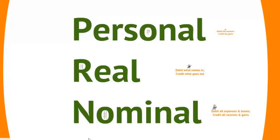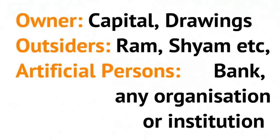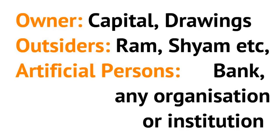In the personal category, we include persons with whom the business deals, and these are the owner, outsiders, and artificial persons. To represent the owner in the books of accounts, we open two accounts: capital account and drawings account.